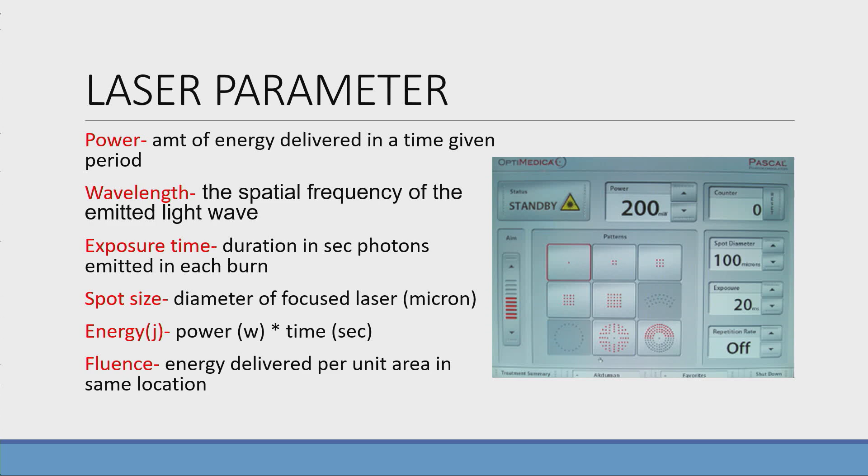That is the energy delivered per unit area in same location. That is very important in case of now the recent low-fluence PDT and half-fluence. That helps to minimize the collateral damage.